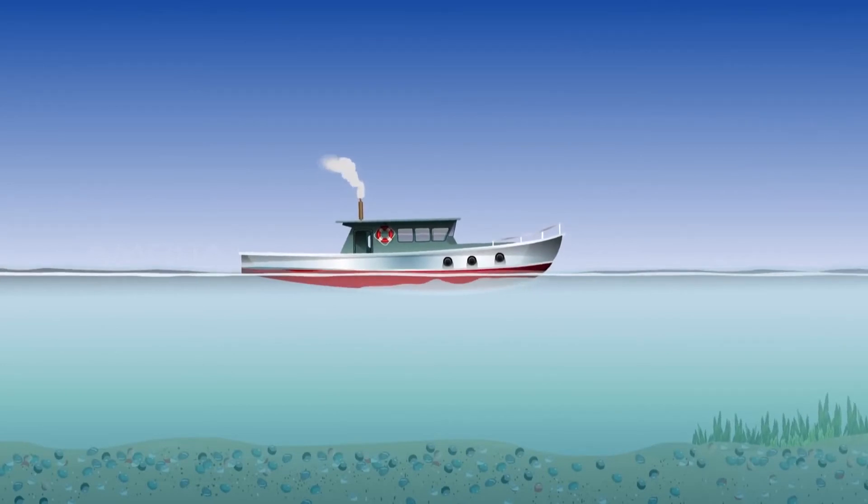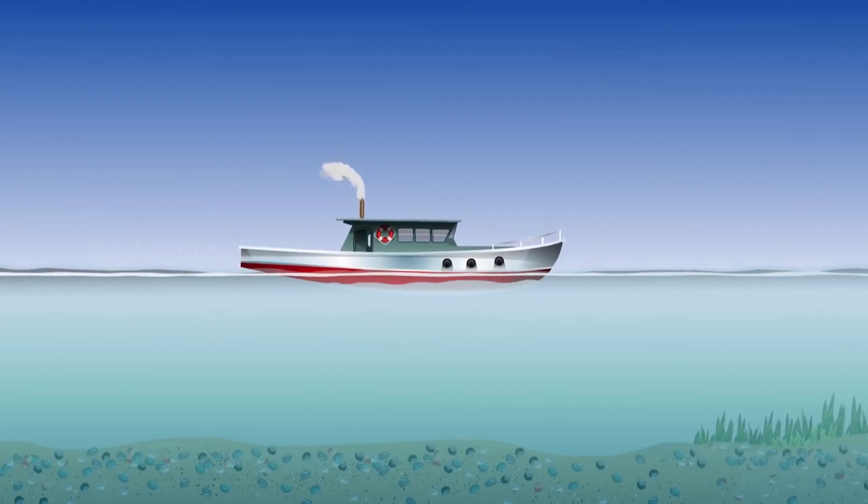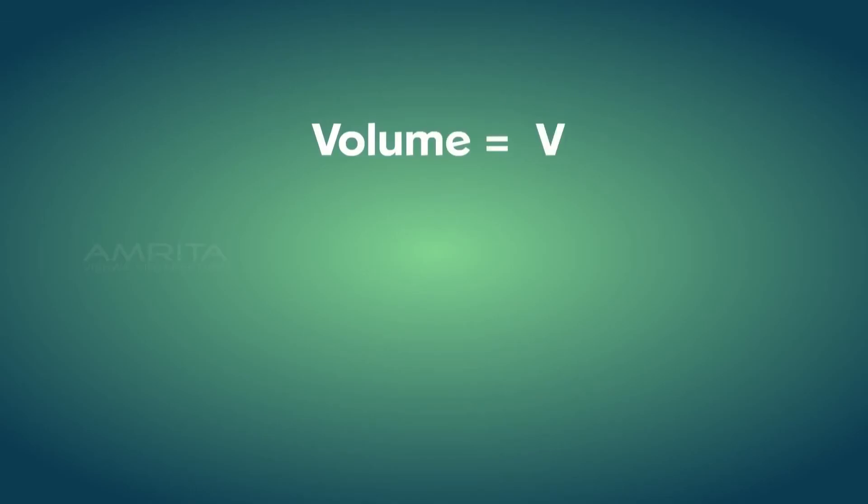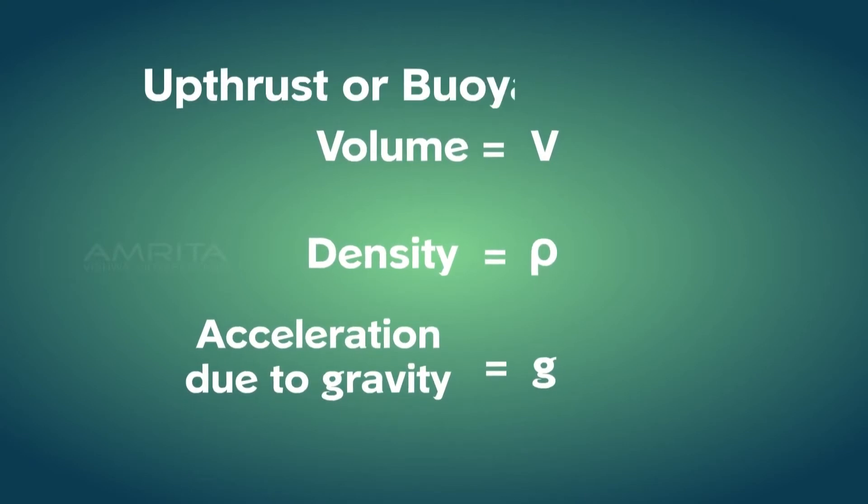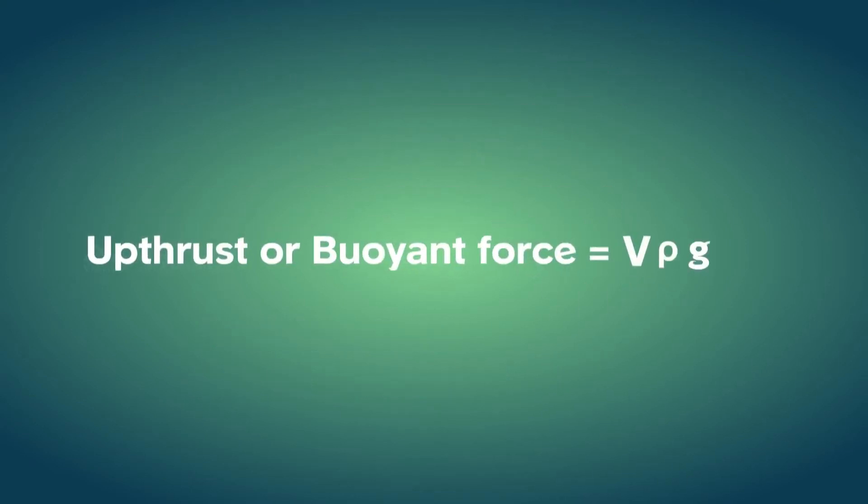These examples indicate that the magnitude of the buoyant force depends on the volume V of the immersed part of the body, the density rho of the fluid and the acceleration due to gravity G. Thus upthrust or buoyant force is equal to V rho G.